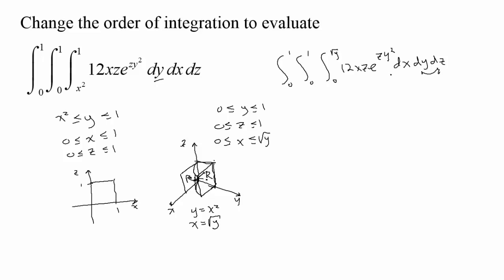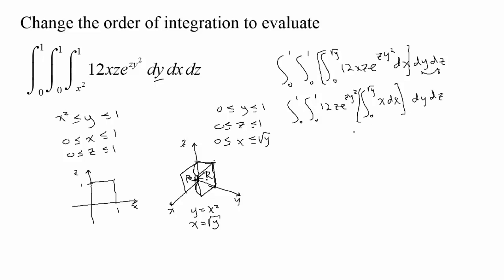So we have the integral from 0 to 1 and from 0 to 1 — those are the bounds on y and z — and then the integral from 0 to root y of 12xz·e^(zy²) dx, dy dz. The bounds on y and z are the same so those could be switched. For the innermost integral, I can pull out everything without an x: 12z·e^(zy²), leaving just the integral from 0 to root y of x dx. The antiderivative is one-half x squared, evaluated between 0 and root y, which gives y over 2.